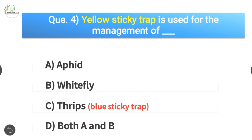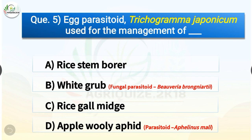Question number five: egg parasitoid Trichogramma japonicum is used for the management of — options are rice stem borer, white grub, rice gall midge, or apple woolly aphid. The correct answer is option A, rice stem borer. For white grub we use fungal parasitoid Beauveria brongniartii, and for apple woolly aphid the parasitoid is called Aphelinus mali.